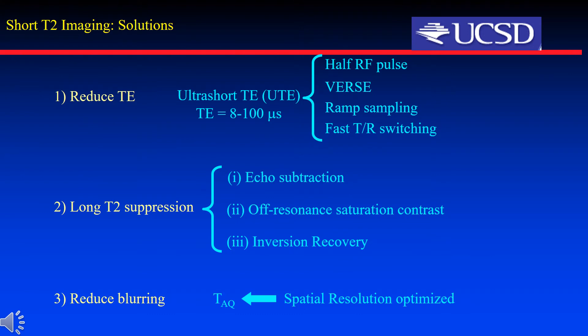The following approaches were employed for short T2 imaging. First, reduce echo time. Ultra-short echo times between 8 to 100 microseconds have been achieved through the combination of half-pulse excitation, variable rate selective excitation, ramp sampling, and fast transmitter-receiver switching. Second, long T2 suppression, including dual-echo subtraction, off-resonance saturation contrast, and inversion recovery pulse techniques. Third, reduce blurring. For short T2 imaging, spatial resolution rather than SNR is typically the limiting factor for clinical application, so data acquisition time should be optimized for spatial resolution.